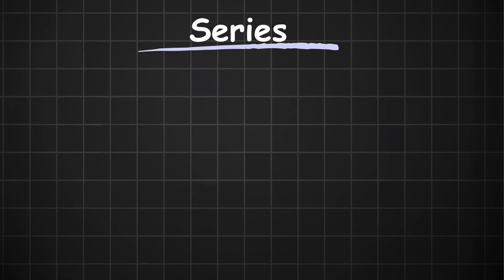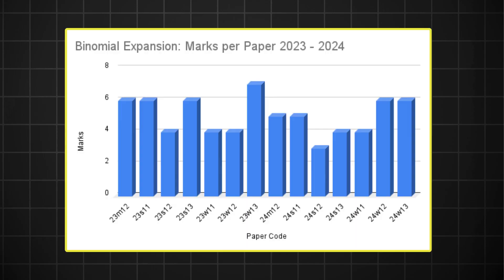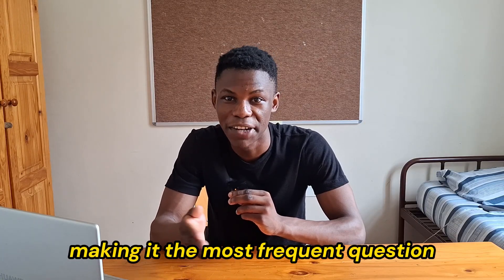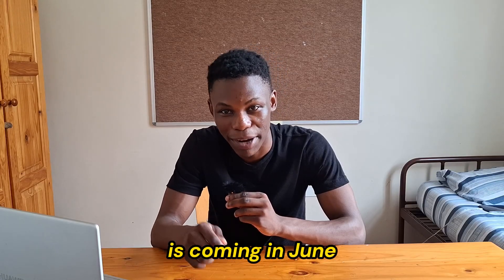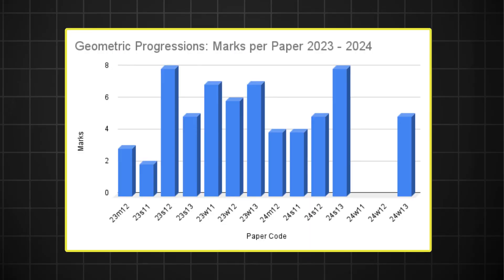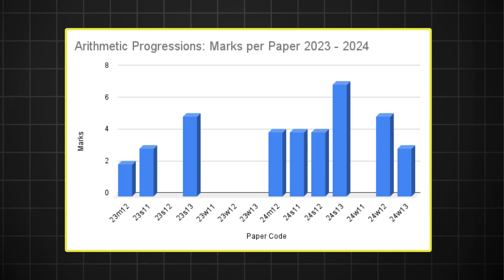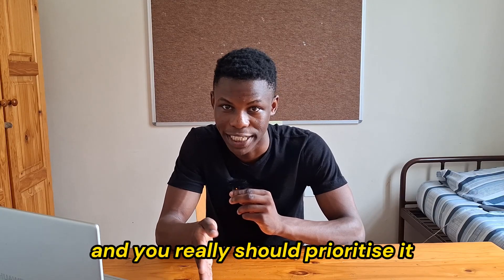The reason this topic is so essential is because all three questions appear in almost every paper. The binomial expansion question has appeared in all 14 of the last 14 papers — making it the most frequent question in P1 maths — so I can confidently say one is coming in June. The geometric progressions question has appeared in 12 of the last 14 papers, sometimes carrying up to 8 marks. The arithmetic progressions question appeared in six of last year's seven papers. Prioritize this topic.